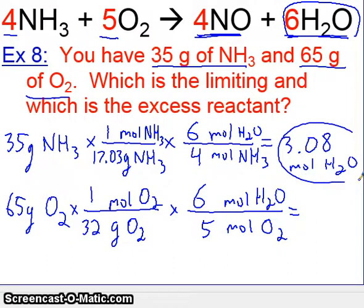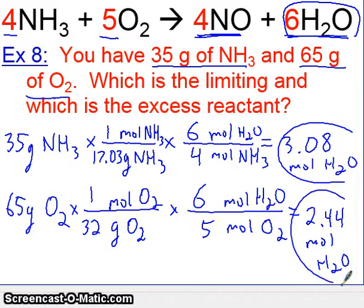If we do the same thing for the bottom, go ahead and do this with me. 65 divided by 32 times 6 divided by 5, we get 2.44 moles of H2O. So which is our limiting reactant? Well, our limiting reactant that produced less is this guy here. So oxygen is, again, our limiting reactant.